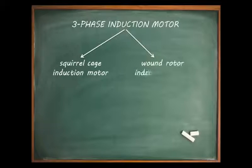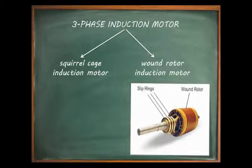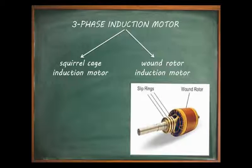The second type of three phase induction motor is the wound rotor induction motor. As the name implies, such a rotor is wound with an insulated winding similar to that of the stator. The connection of the wound secondary to the external terminals is done through slip rings and brushes.